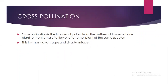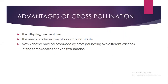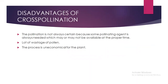Cross-pollination is the transfer of pollen from the anthers of a flower of one plant to the stigma of a flower of another plant of the same species. Advantages: the offspring are healthier; the seeds produced are abundant and viable; new varieties may be produced by cross-pollinating two different varieties of the same species or even two species. Disadvantages: pollination is not always certain because a pollinating agent is needed which may not be available at the proper time, and there is a lot of wastage of pollen grains.